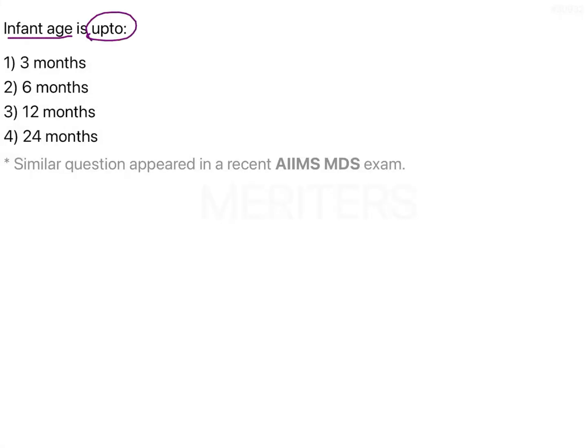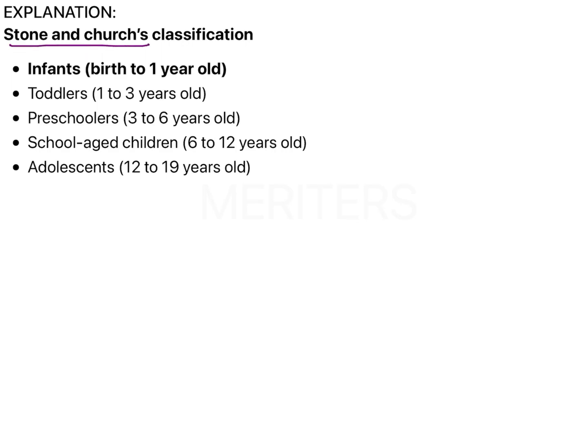This question is asking up until what age a child would be known as an infant. This classification on the basis of age was given by Stone and Church — this is important because they could also frame a question asking you specifically according to Stone and Church's classification. So according to them, the age between birth to one year old, the child will be known as an infant.